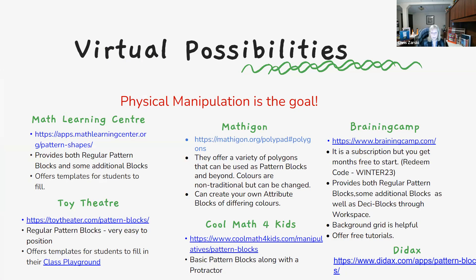If you don't have any physical pattern blocks, there are virtual options as well. Physical hands-on engagement is the first choice, but virtual manipulatives are also valid — a manipulative doesn't have to be in your hand. Several virtual tools are listed, each with some information about them. If you're looking for samples for students to model a pattern after when first learning to use pattern blocks, you can find some in these tools or do a Google search — there are many free downloadable options.